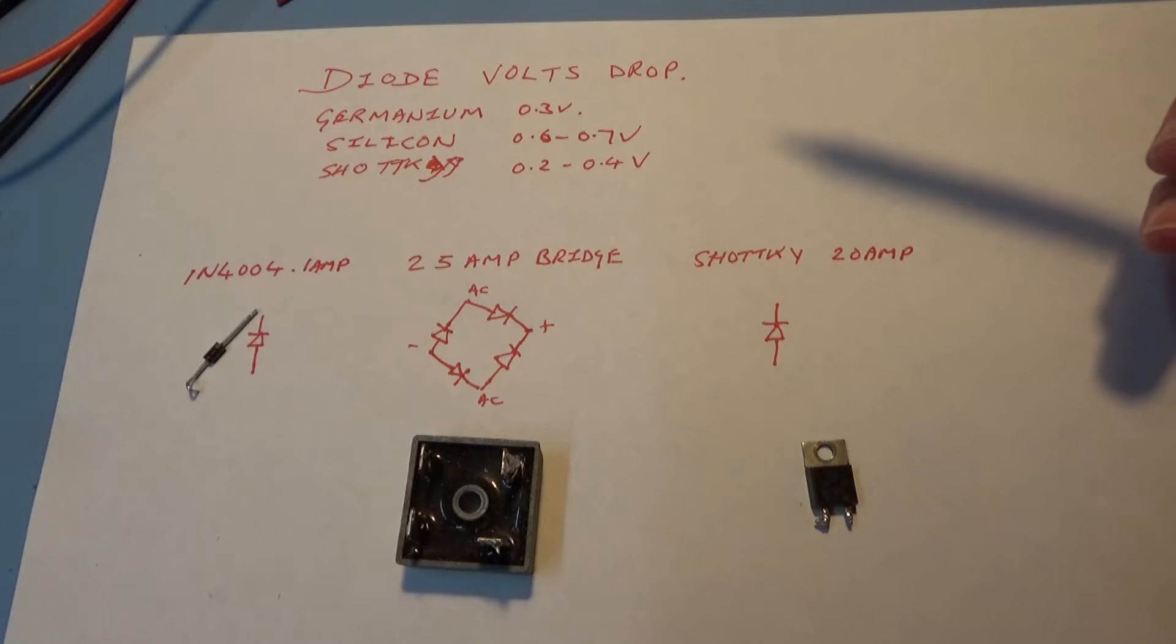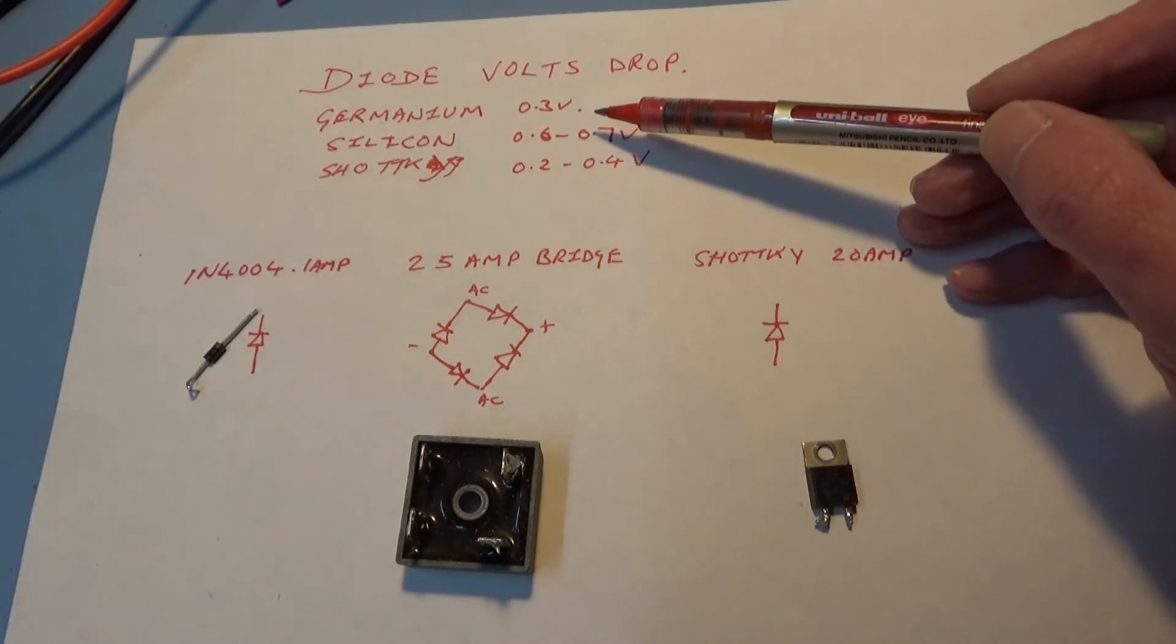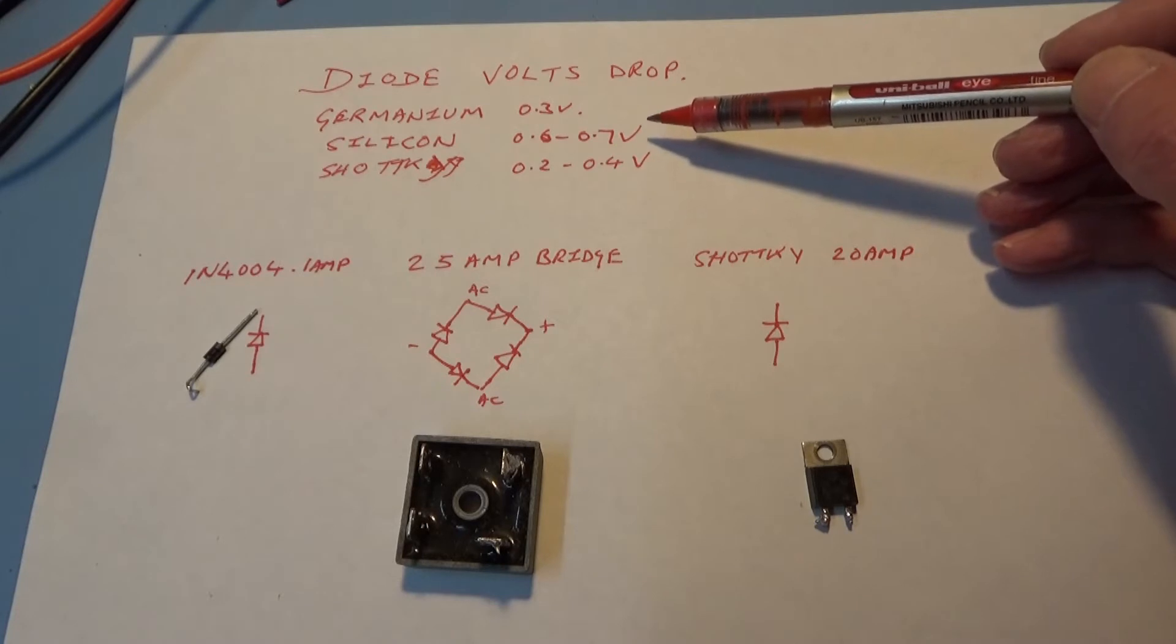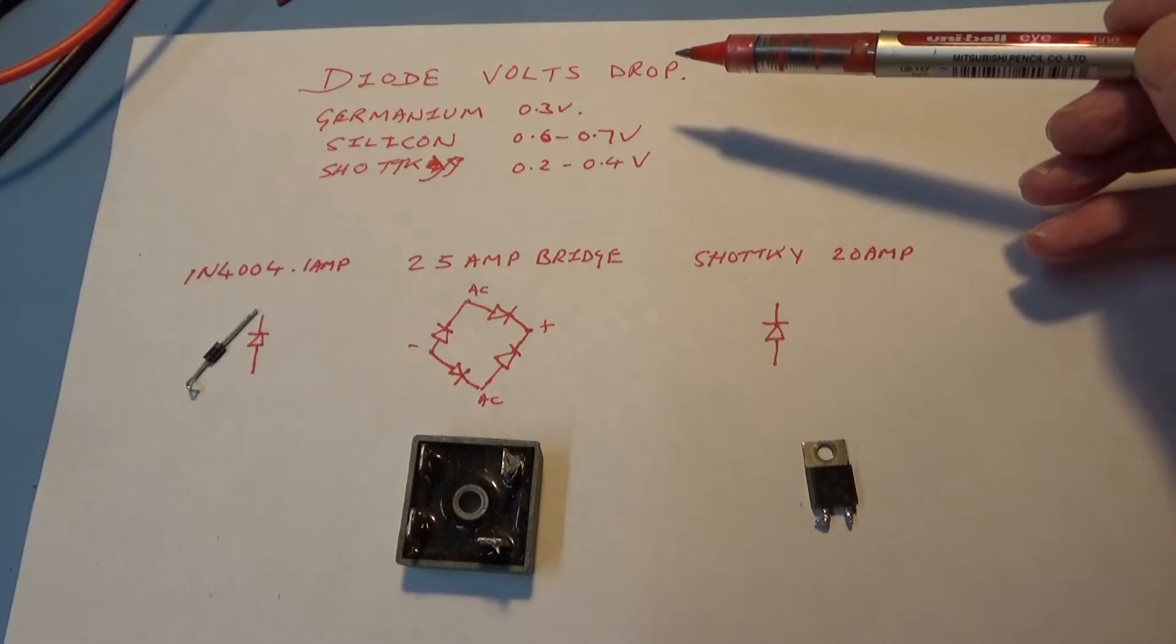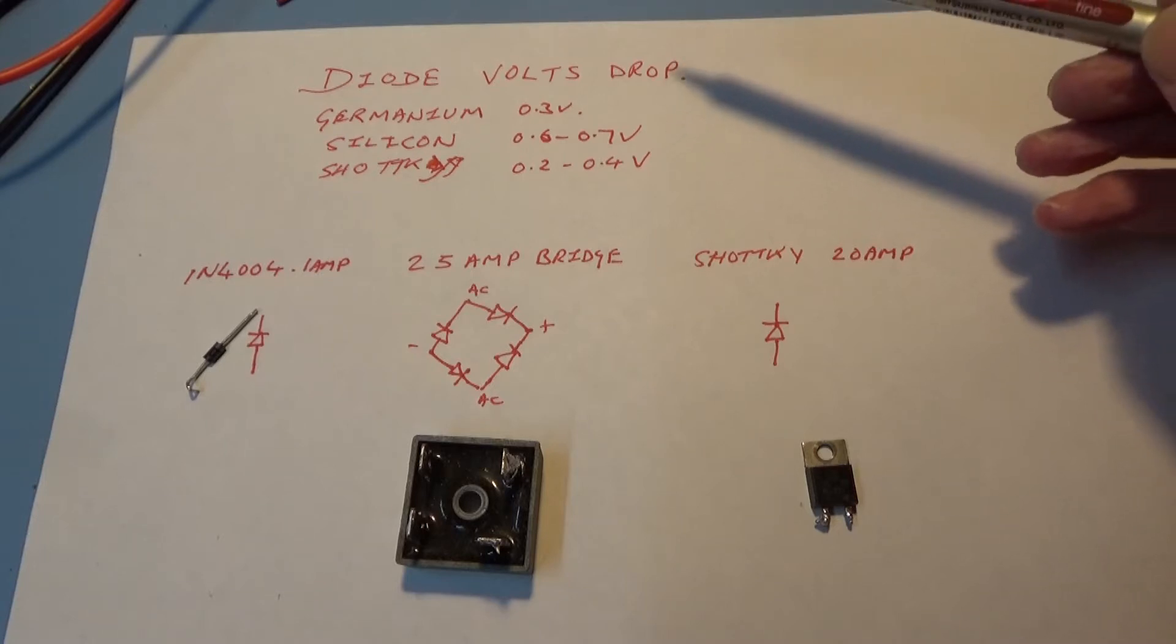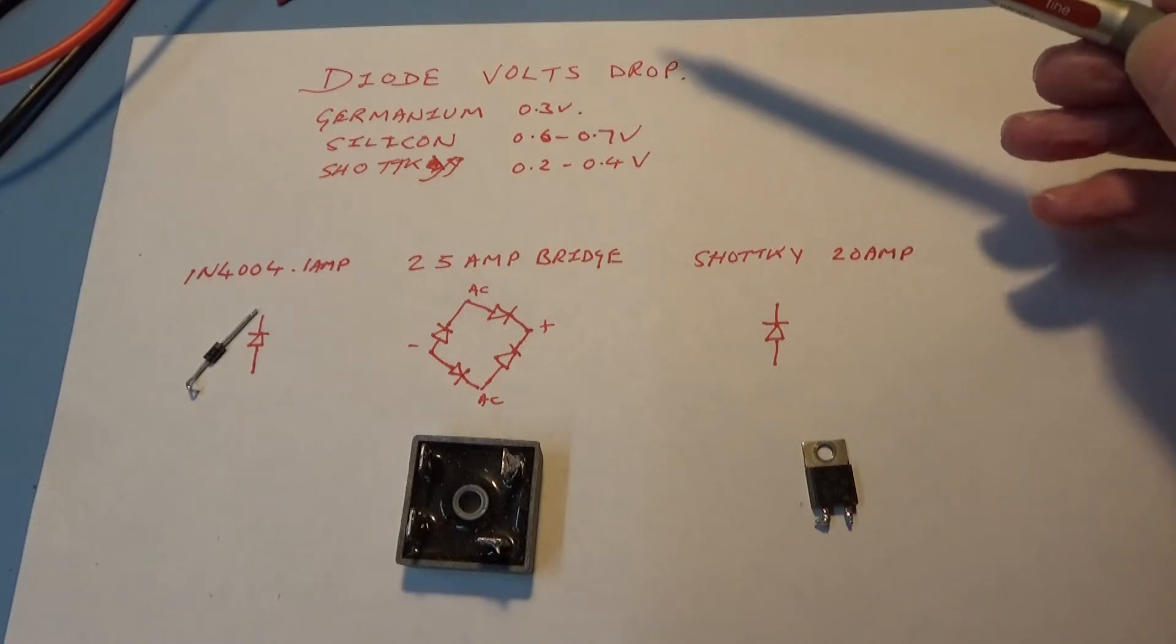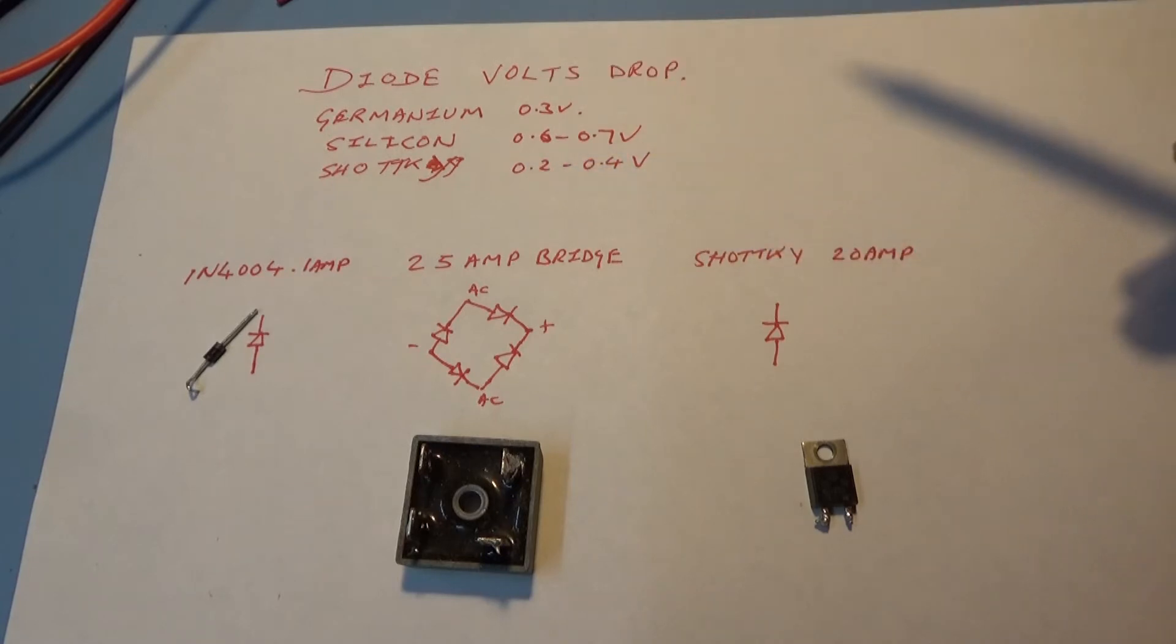Silicon of course, most people are taught at school 0.6 to 0.7 volts drop on a silicon diode, which as we shall see is not always the case. And now more recently Schottky diodes, I can't spell Schottky I had to look it up.